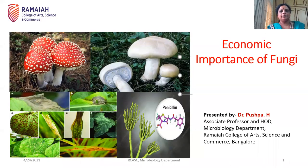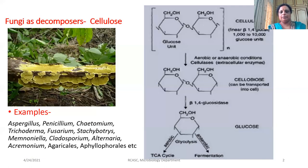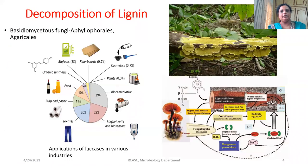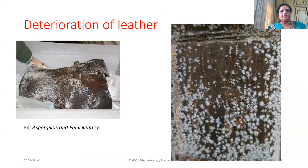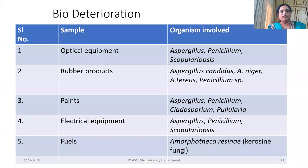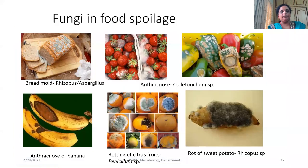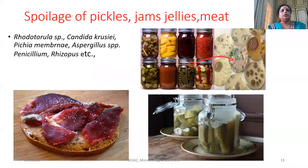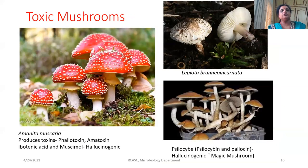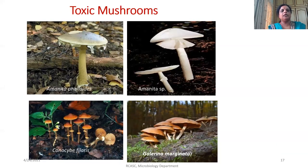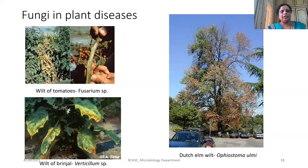Let us continue with my last class. We were discussing about the economic importance of fungi, and today we are going to study a little more about it. In our last class, we studied about the decomposers role of fungi and decomposition of pectin, lignin, cellulose, deterioration of wood, spoilage of paper, textiles, leathers, bio-deterioration of various other equipment, spoilage of food, canned food, mycotoxins, mushroom toxins, toxic mushrooms, and diseases caused by fungi on plants.